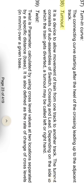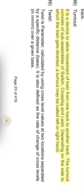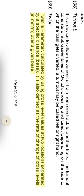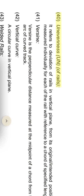Turnout: it is a device to allow movement of a train from one track to another track. The turnout consists of sub-assemblies of switch, crossing, and lead. Depending on the side to which the train gets diverted, a turnout may be called left or right hand. Twist: twist is a parameter calculated by using cross level values at two locations separated by a specific distance (base). It is also defined as the rate of change of cross levels over a given base.